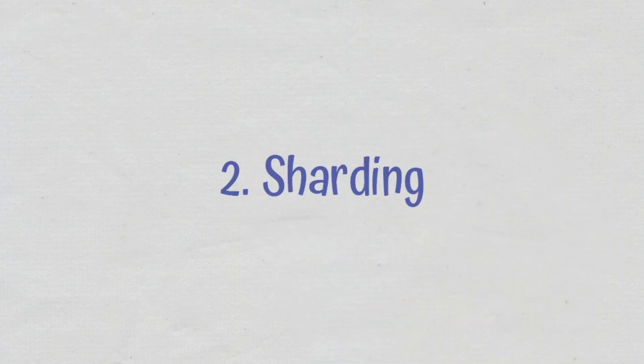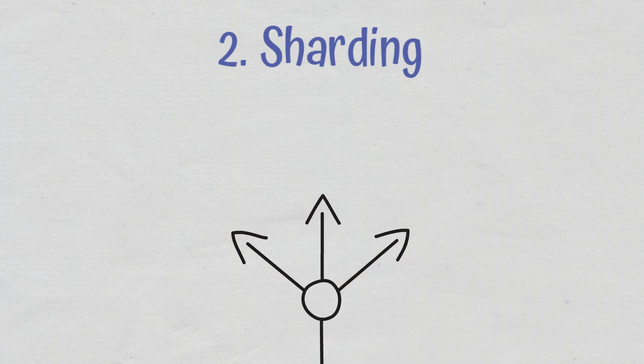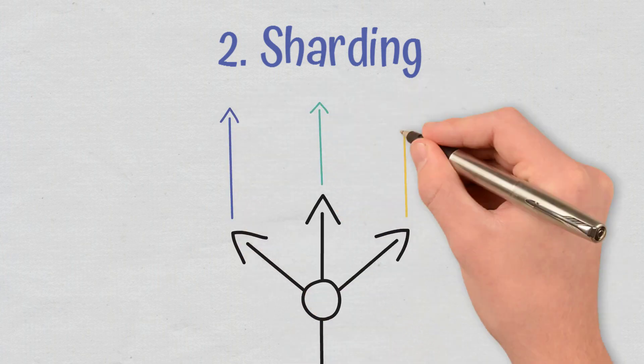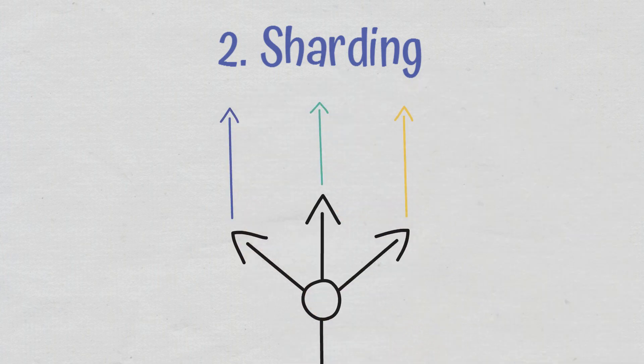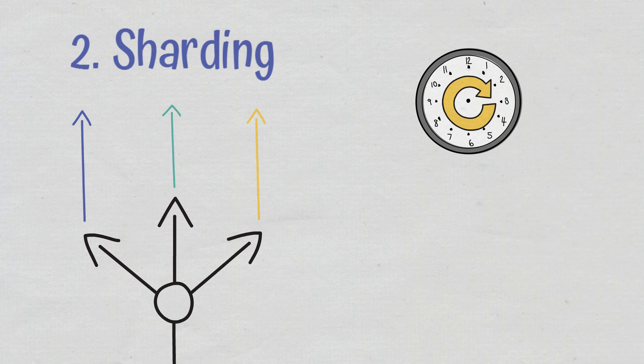Sharding. Sharding is one of the most popular layer 1 scalability methods, and it is a mechanism that has been adapted from distributed databases. Through sharding, transaction sets are broken down into smaller pieces, known as shards, which are processed by the network in parallel. Since the workload is spread across the peer-to-peer network better, blocks are completed faster.